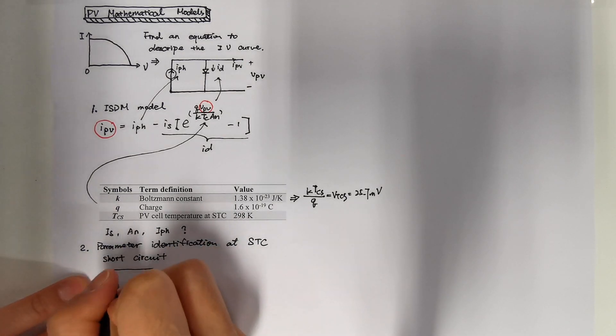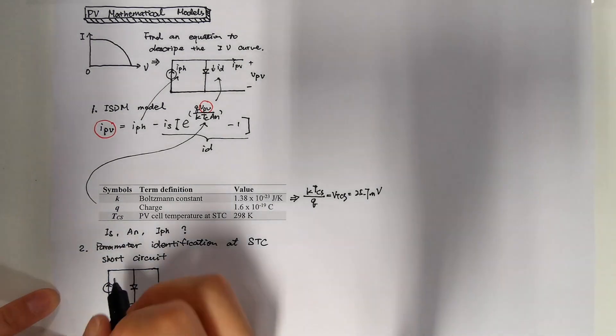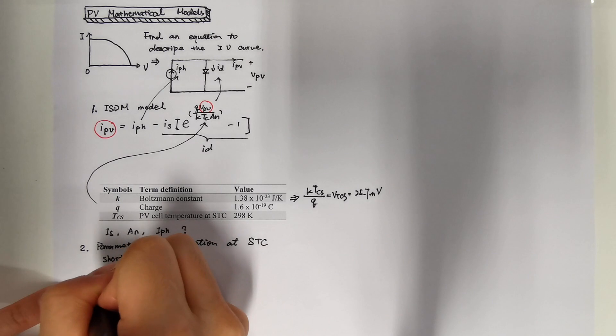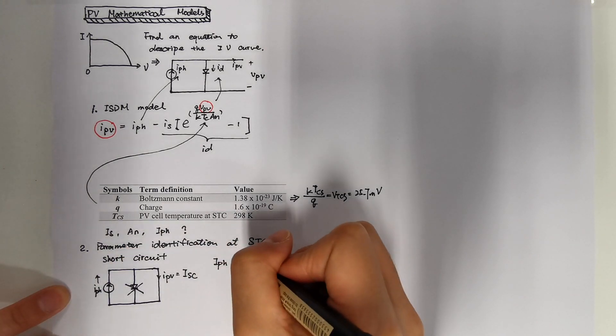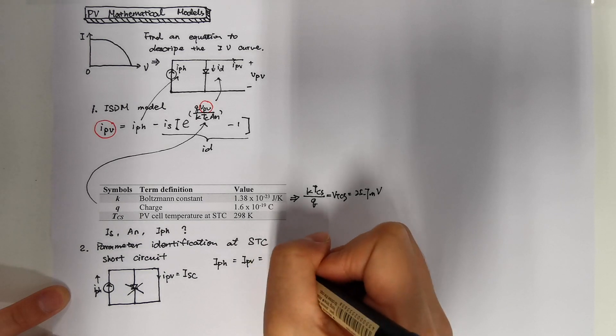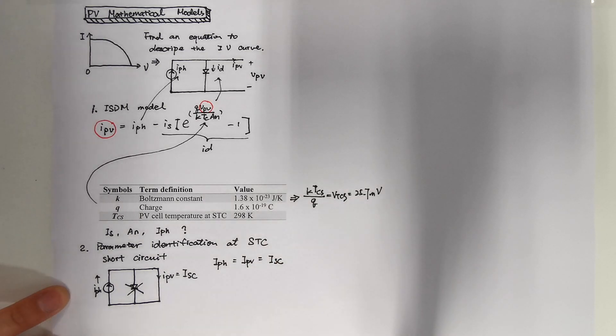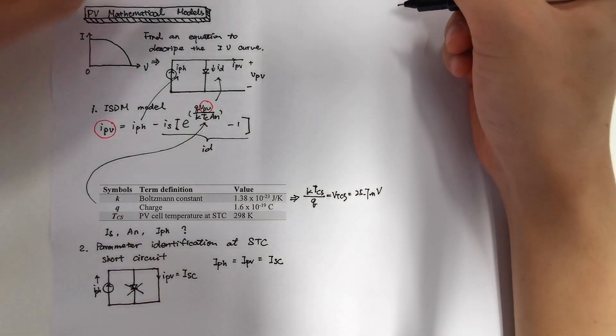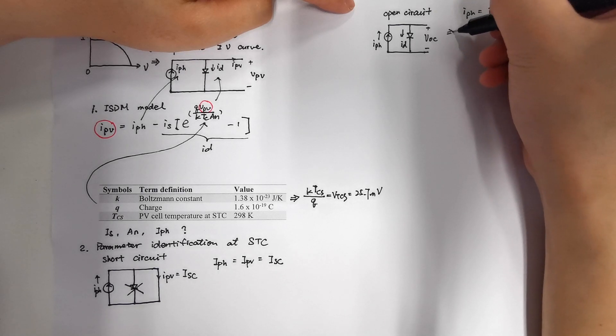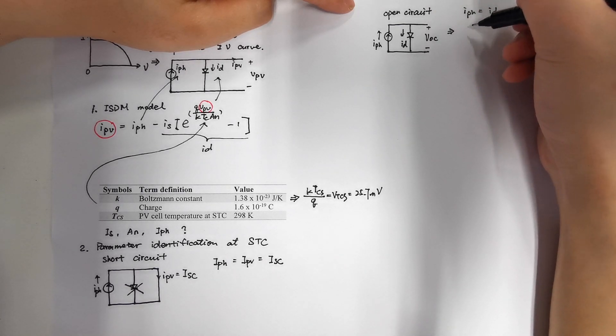First of all, we put the two terminals together to short the circuit. Then we can have the IPH is equal to IPV. And the IPV now we can find in data sheet is our ISC, which is our short circuit current.